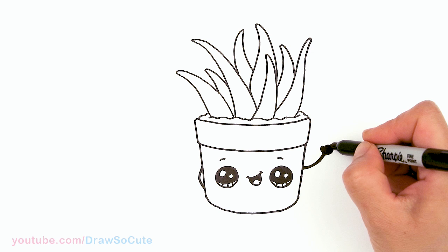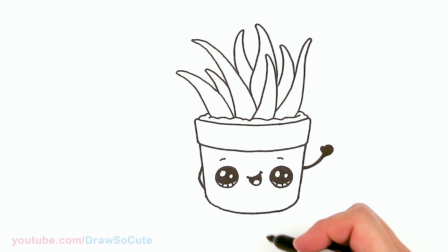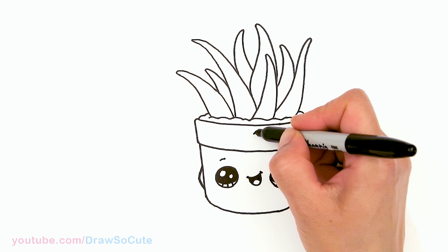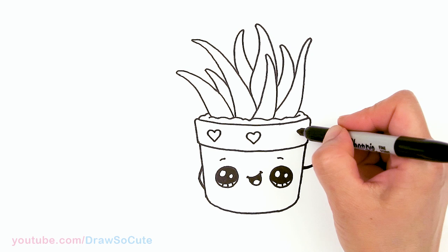Let me fix this pot. Make it a little bit rounder. There. Now to decorate my pot. I'm going to put a heart right in the center. So say about right here. Go ahead and draw one heart. And another one on the end. And here as well. So right here.